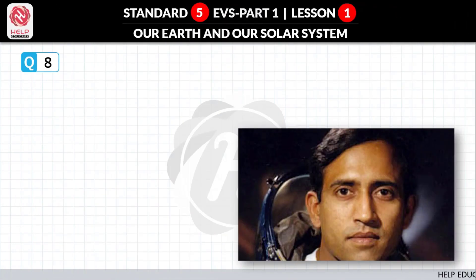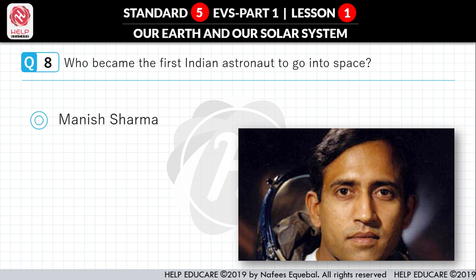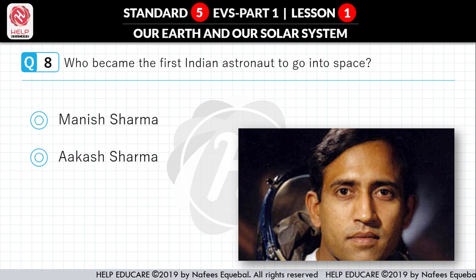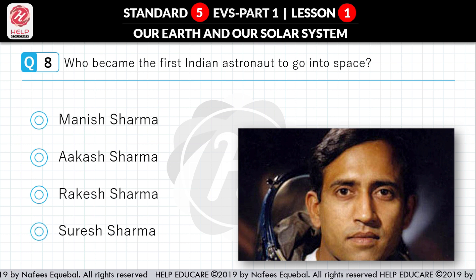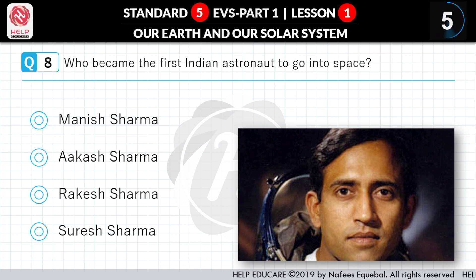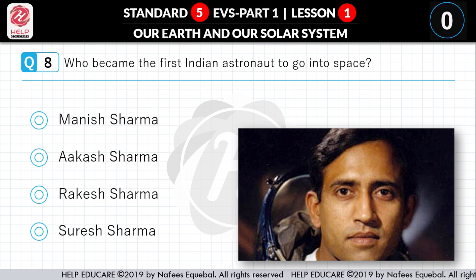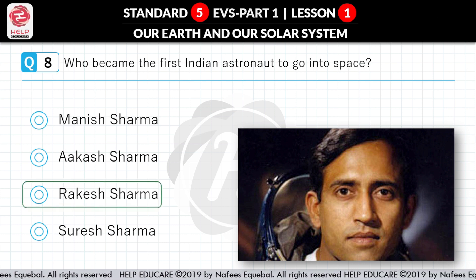Question No. 8: Who became the first Indian astronaut to go into space? First option: Manish Sharma. Second option: Akash Sharma. Third option: Rakesh Sharma. Fourth option: Suresh Sharma. Correct answer is Rakesh Sharma.